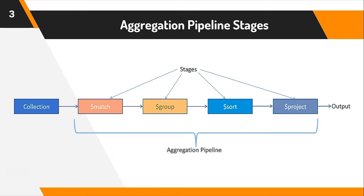Next, sort — sorting can be done in ascending order or descending order. Next, we have project. As discussed in our previous tutorial, project is used to remove the unnecessary fields that you don't want in the resultant set. And finally, after matching all four pipeline stages, you get the resultant output.